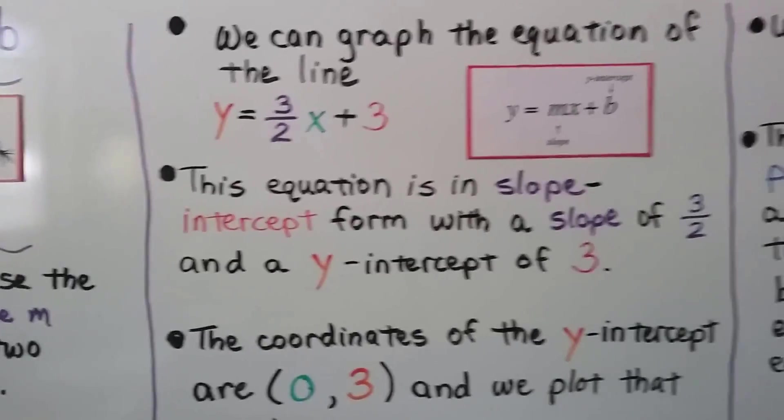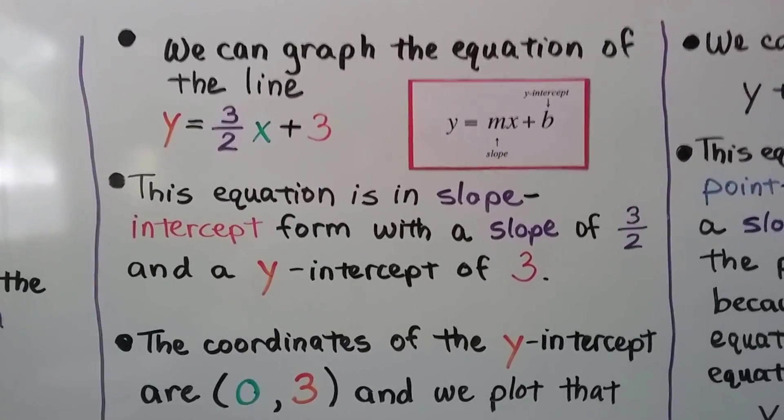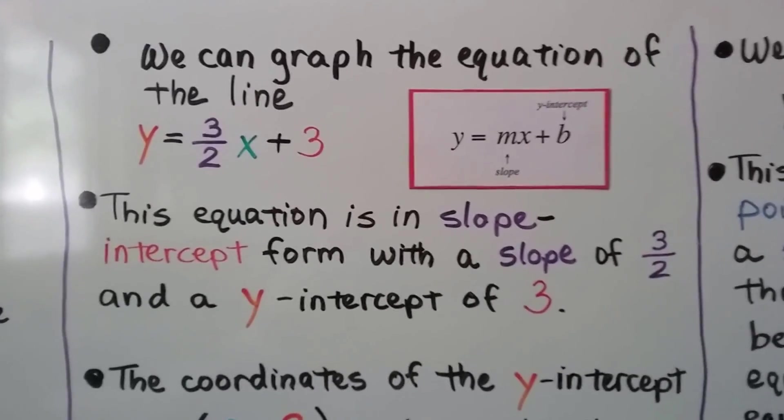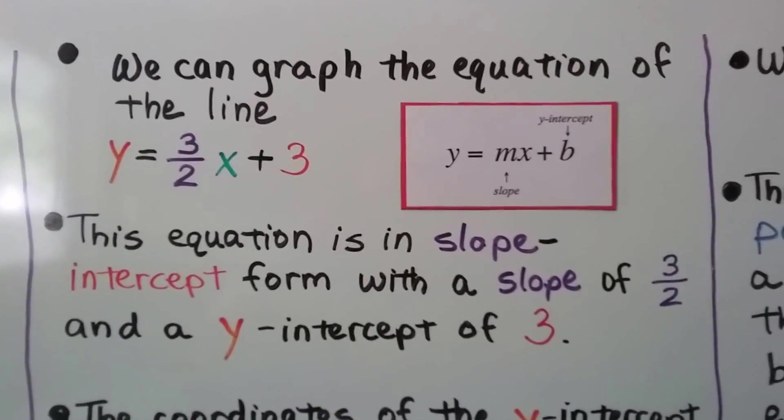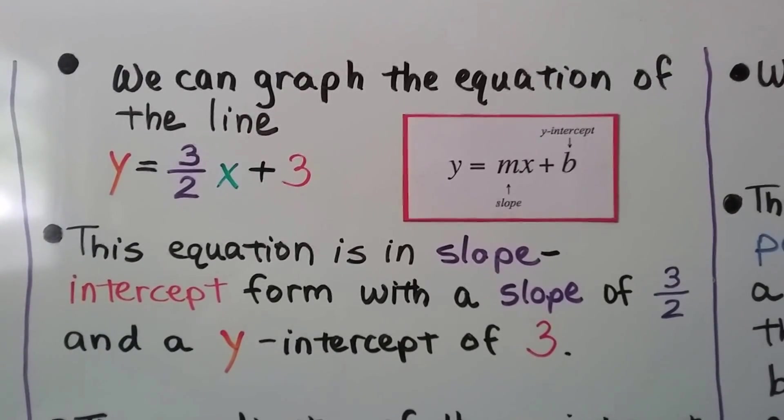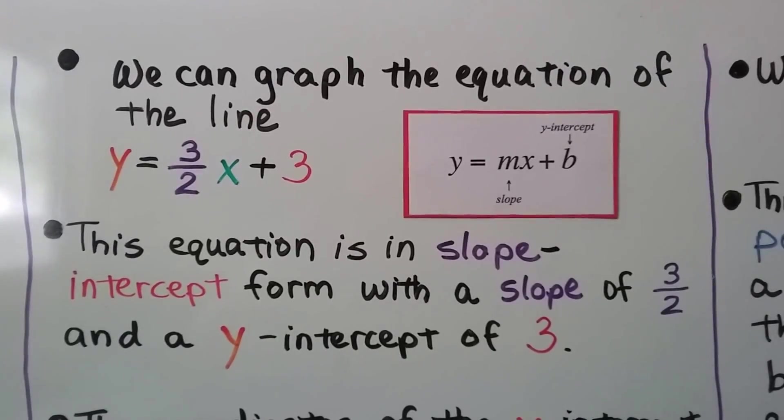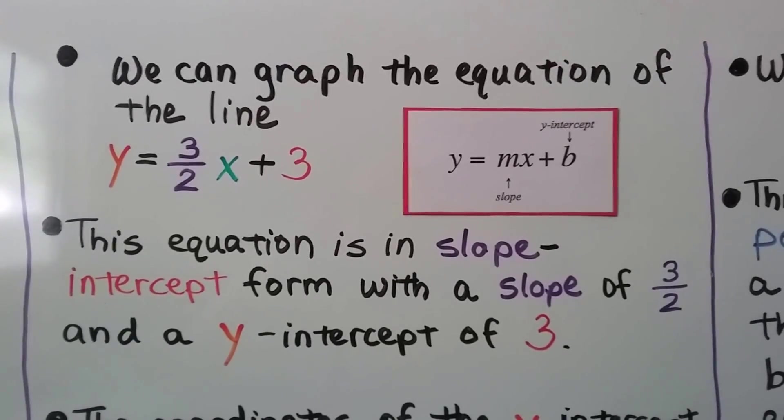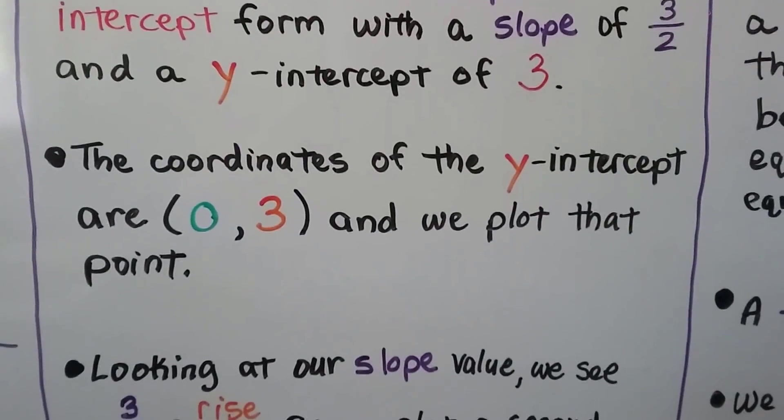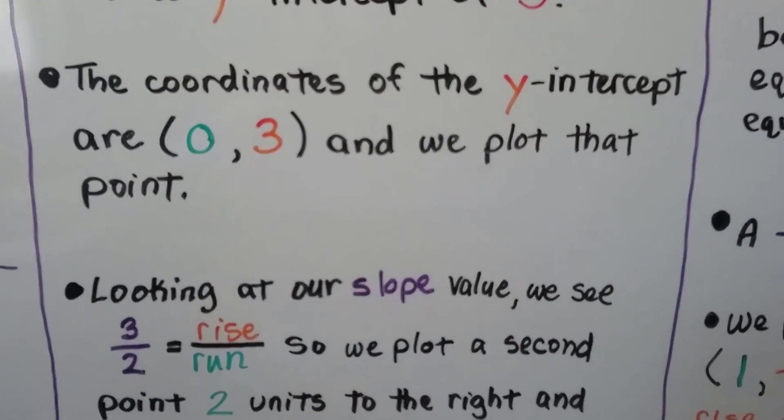We can graph the equation of the line y = (3/2)x + 3. This equation is in the slope-intercept form with a slope of 3/2 and a y-intercept of 3. The slope is m, that's the 3/2. And our b is the y-intercept, it's a 3. The coordinates of the y-intercept are (0, 3), and we plot that point.